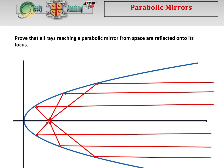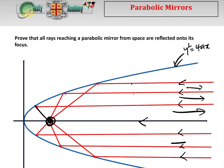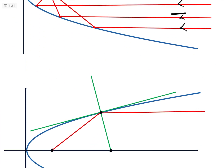This is a great little question. We have to prove that all rays reaching a parabolic mirror — y² = 4ax — from space are reflected onto its focus. All these rays coming in from space are parallel to the axis of symmetry, and no matter where they hit on the mirror, they go to one single point: the focus. The inverse is also true — this is basically how searchlights work: one point source of light, no matter where it hits the mirror, goes out parallel to the axis of symmetry.